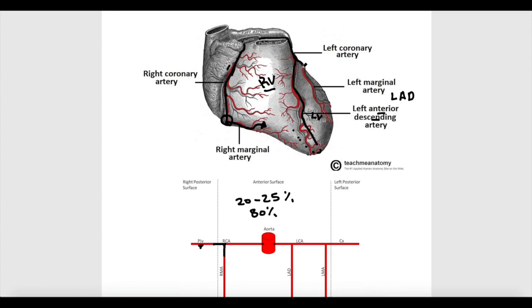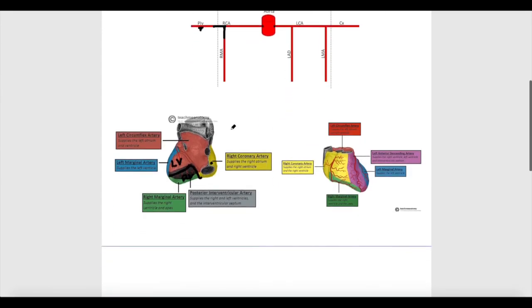The other branch of the left coronary artery is called the circumflex artery. It's called circumflex because it winds or circles the heart. The circumflex artery runs the same course as the right coronary artery — it runs in the atrioventricular groove between the atria and ventricles anteriorly, then winds around the heart to run in the atrioventricular groove posteriorly. Before winding around the heart, it reaches the left margin and gives the left marginal artery. So the right marginal artery is a branch of the right coronary artery, and the left marginal artery is a branch of the circumflex artery.